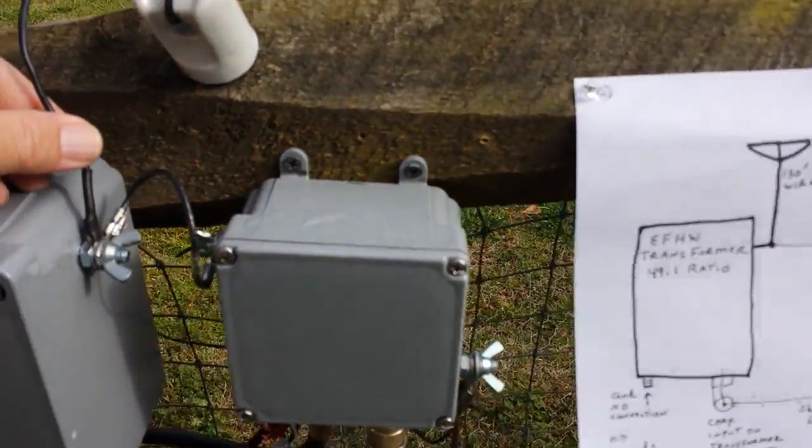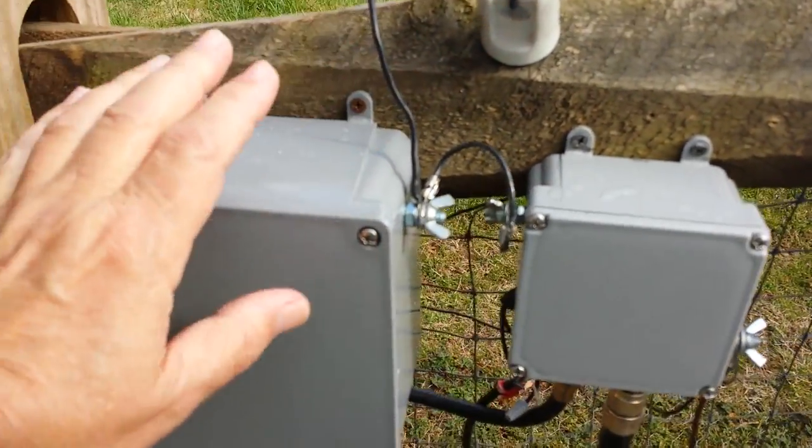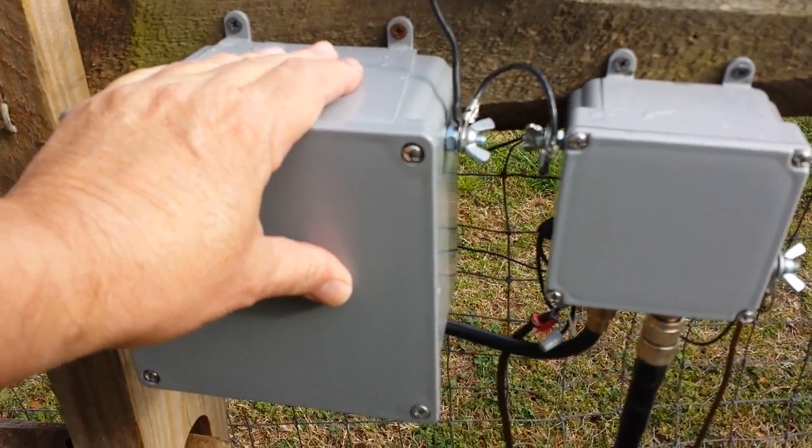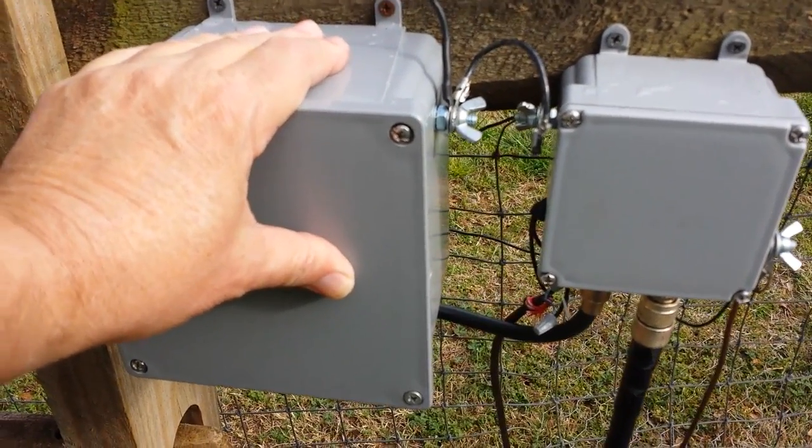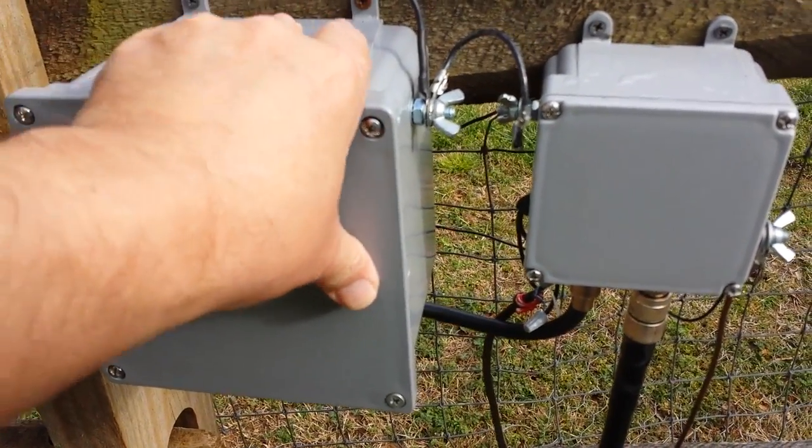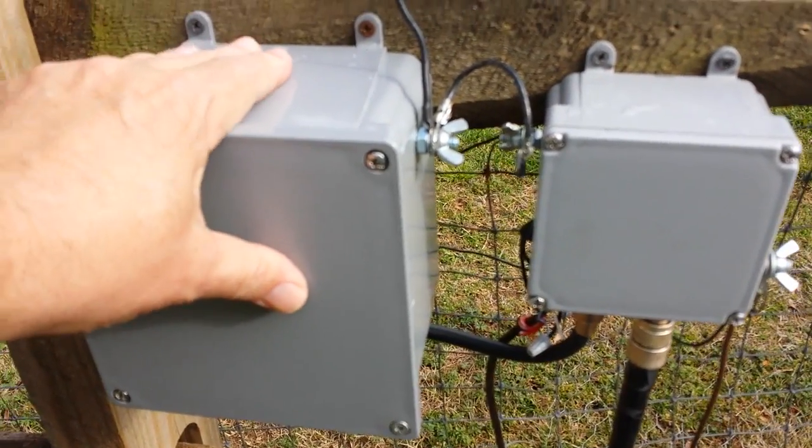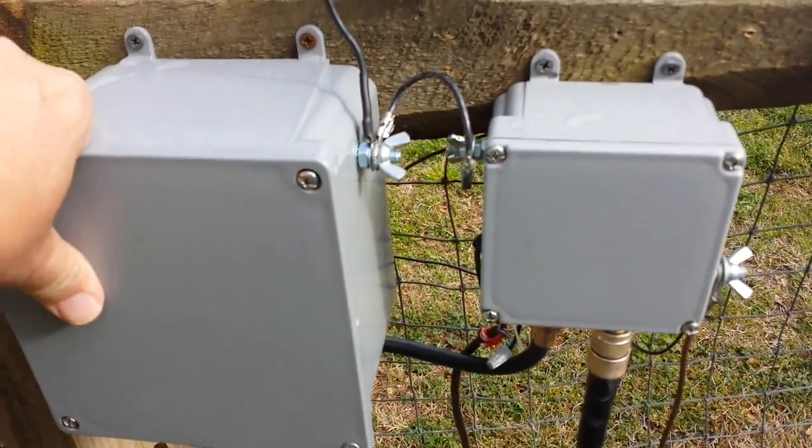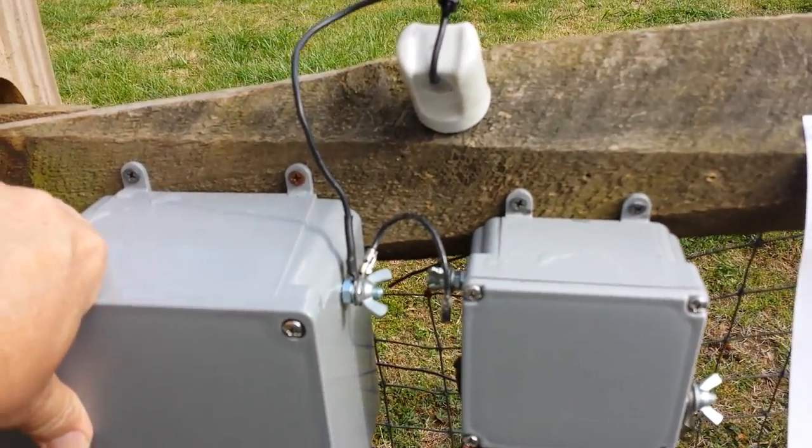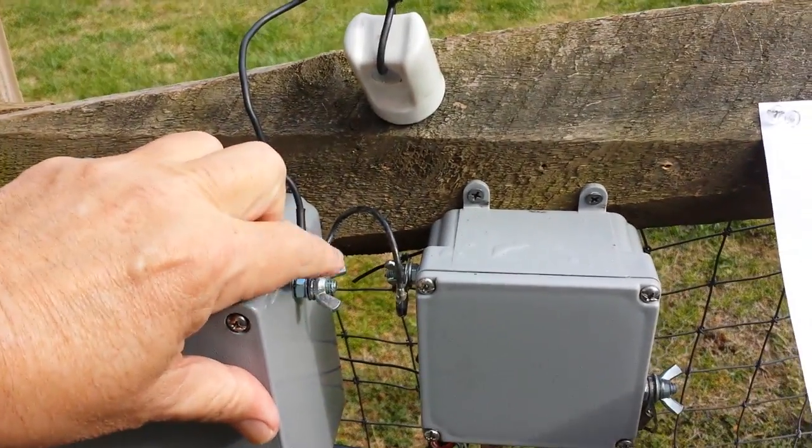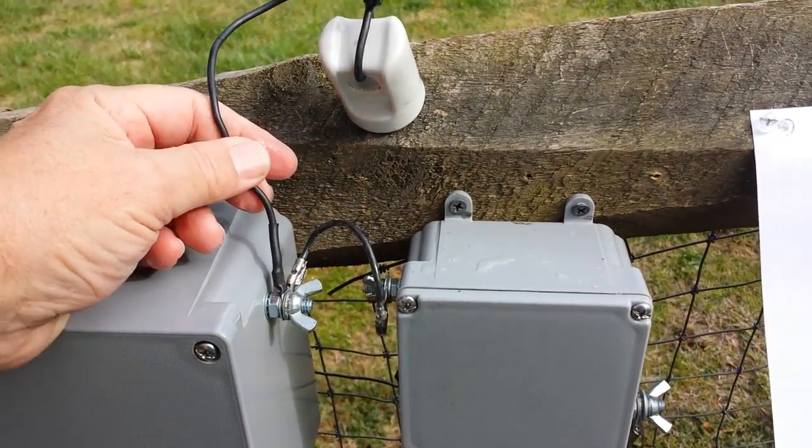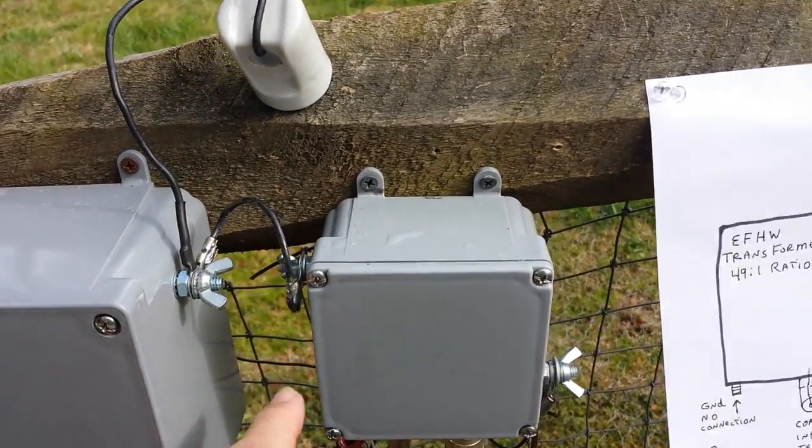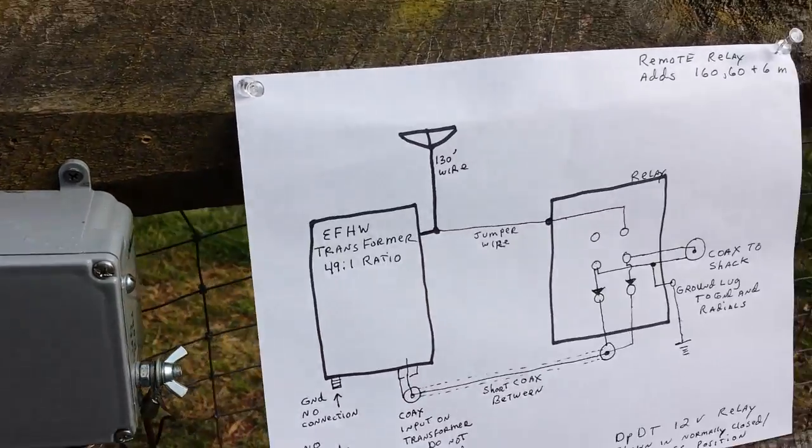So that takes care of all the bands. This alone will cover 80 through 10 and everything in between with the exception of 60 meters, and of course it won't work on 160. Again, you have to have a high impedance antenna connected here but we're bypassing it with this relay and so this is how we do it.